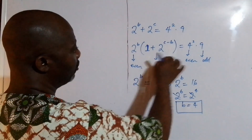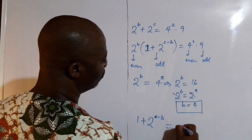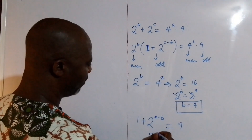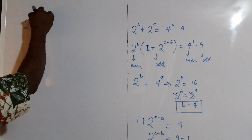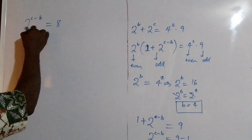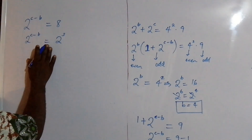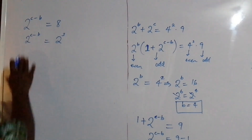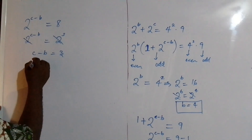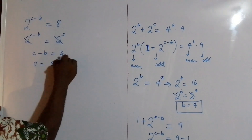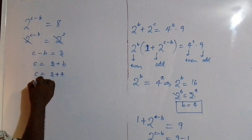Now comparing odd with odd: 1 plus 2^(C−B) equals 9, so 2^(C−B) equals 9 minus 1, which equals 8. This is 2^(C−B) equals 2 to the power of 3. Since the bases are the same, we equate the powers: C minus B equals 3, so C equals 3 plus B. Since B equals 4, we get C equals 3 plus 4, so C equals 7.